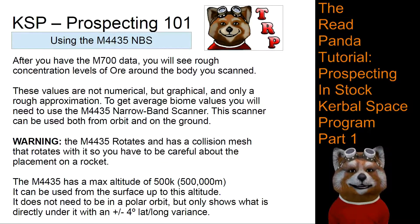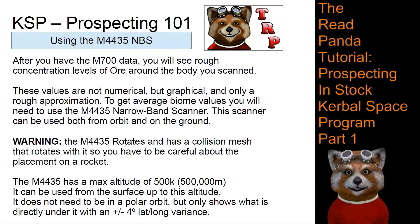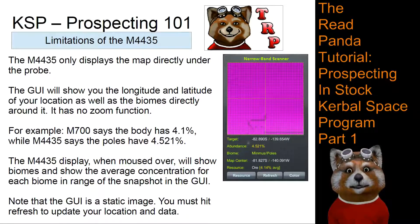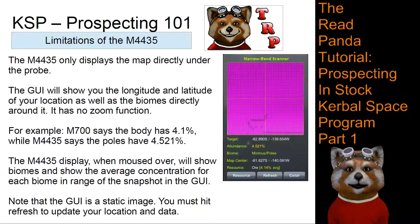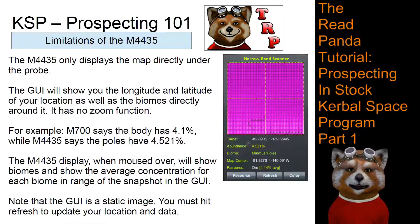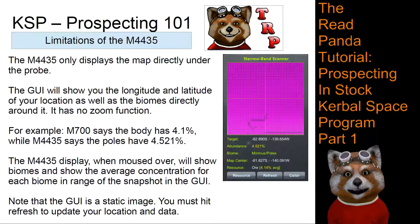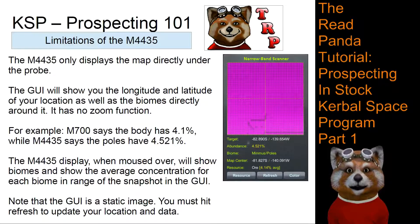The narrowband scanner's interface box gives you a plus and minus four degree latitude and longitude variance, meaning it will show you a different amount of space depending on what planet you're over. It only displays the map directly under the probe, shows your longitude and latitude, but has no zoom function. When moused over, it will show each biome it's over. However, it is a static image and you need to hit refresh to change the display of what's directly below — great for honing in on biomes, but not for finding exact in-biome hotspots.